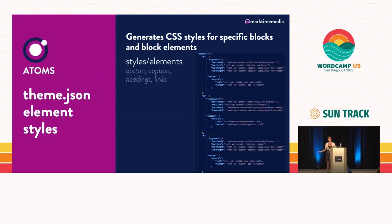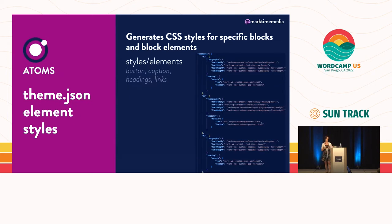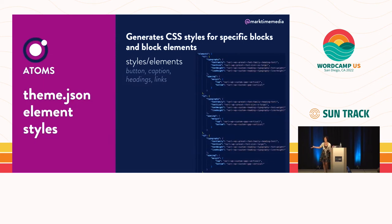theme.json also supports styling elements directly — our atoms, like headings and paragraphs. There are several block-level elements that theme.json will actually output CSS styles for, rather than just variables. This is outputting actual CSS styles instead of requiring you to write the CSS yourself. I'd recommend doing this if you're doing a full site editing theme, though you can also handle element styling within your CSS for a hybrid theme. Either way, you can reference the variables we already created.